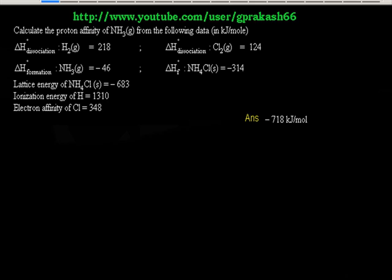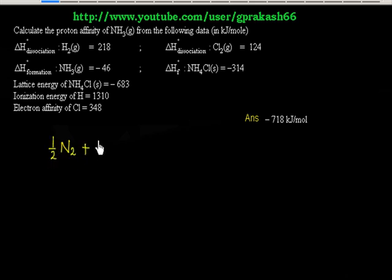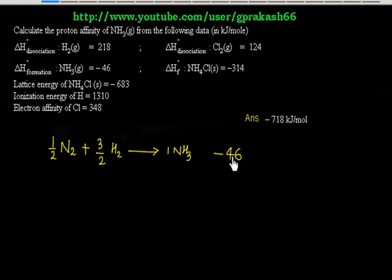We have to calculate the proton affinity value and we have been given the heat of formation value of NH3. The heat of formation of NH3 is written as half mole of N2 reacting with 3/2 mole of H2 to give 1 mole of NH3. For this reaction, delta H is minus 46 kJ per mole.